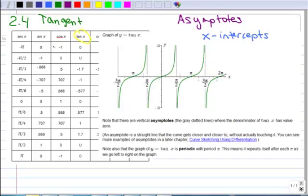In section 2-4, we're going to learn about the tangent, cotangent, secant, and cosecant graphs. Let's start with the tangent.